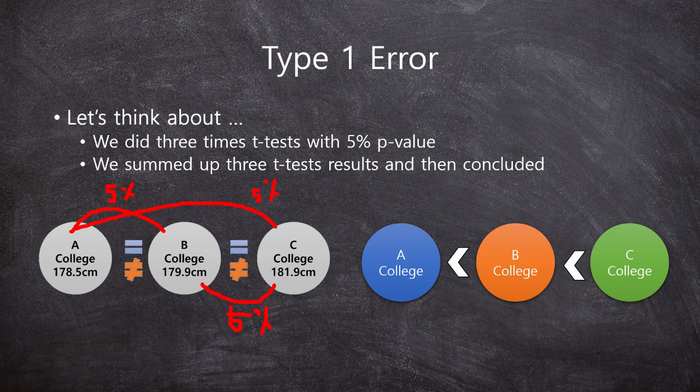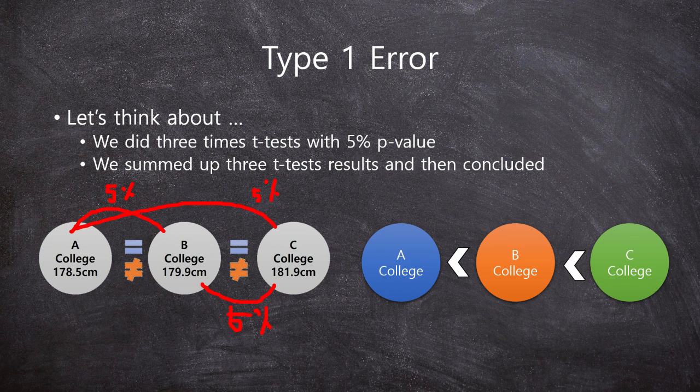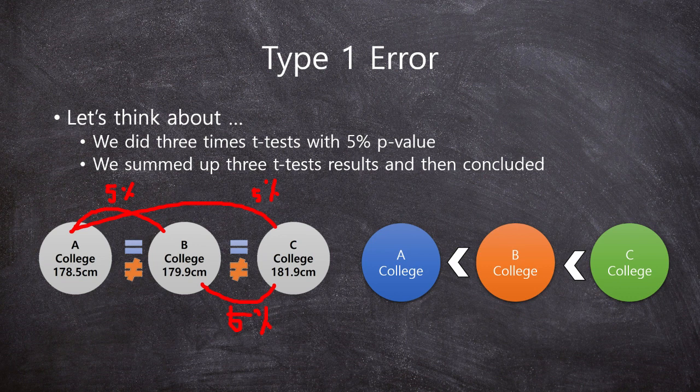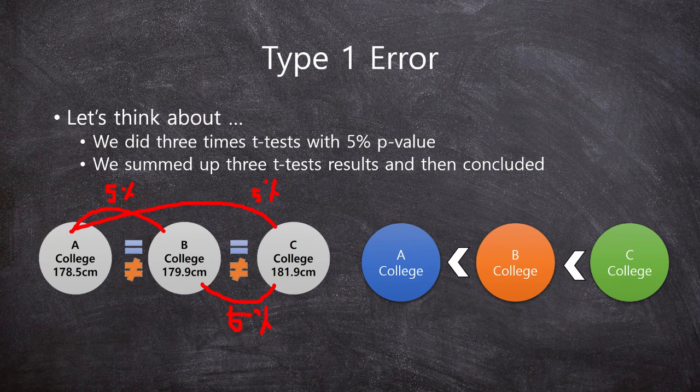And then from the 3 results of the t-tests, we summed up all things and then concluded that, okay, the B college male student is taller than A, and C is taller than B.